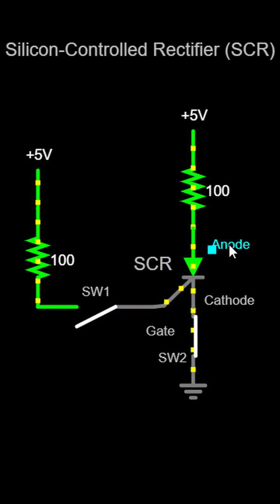The SCR has three terminals: an anode, a cathode, and a gate. The anode is the positive terminal, the cathode is the negative terminal, and the gate is the control terminal.